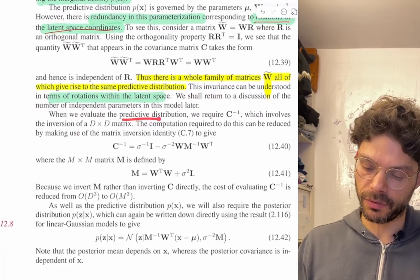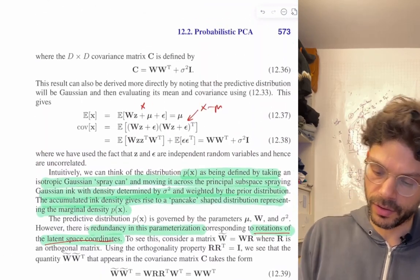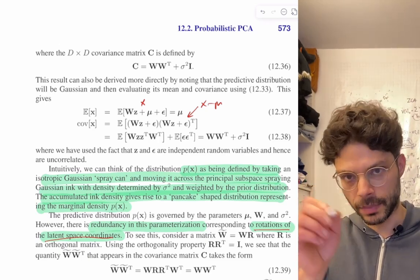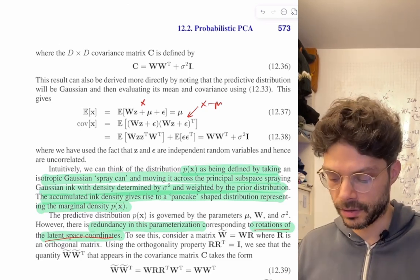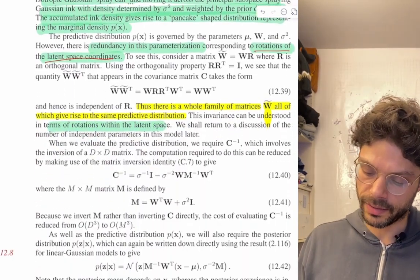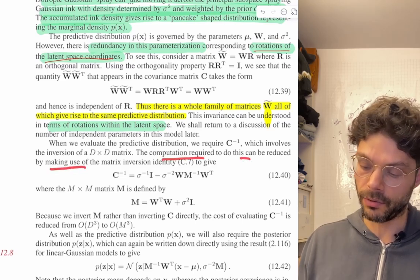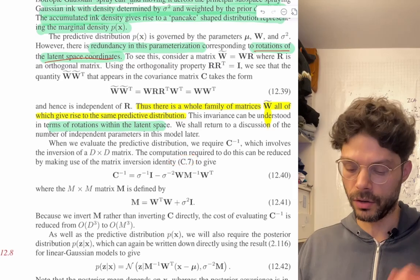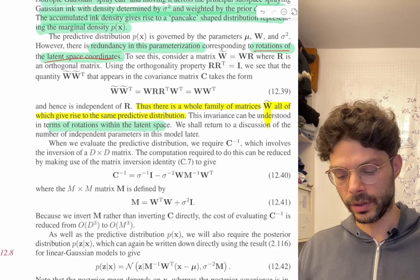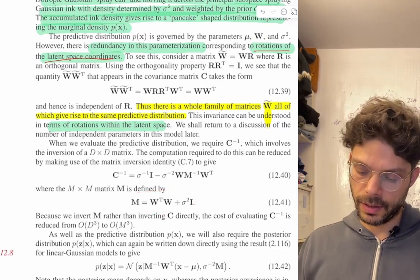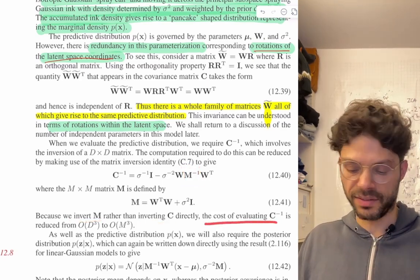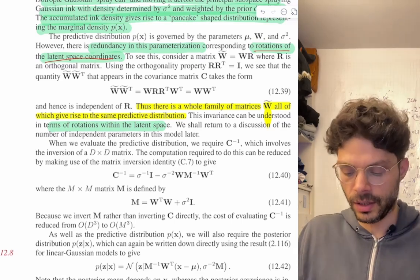When evaluating the predictive distribution we require C^{-1}, where C is the d-by-d covariance matrix and d could be very large. It turns out that using the matrix inversion identity, we can reduce the computation required. We convert the inversion into an m-by-m problem, where m is related to the latent dimensionality. Inverting M rather than C, the cost of evaluating C^{-1} is reduced from O(d^3) to O(m^3), yielding huge savings in high-dimensional spaces. This matrix inversion lemma is really important and can make algorithms a lot faster in practice.